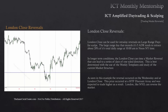London Close can be used for intraday reversals on large-range days for scalps. Large-range days that exceed the five-day average daily range tend to retrace about 20% of the total daily range at 10 o'clock to noon New York time. In longer-term conditions, London Close can time a market reversal leading to a series of days of one-sided direction — best determined with weekly templates and current market structure. But there are times when you anticipate the New York session causing the reversal, and then later London will go back to that higher timeframe PD array and blow out the stops from the New York session. Always be mindful that even if you're expecting a New York reversal, London can come back and do the same thing — create a high, trade down aggressively, and then come back one more time to knock out those stops.